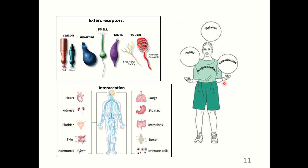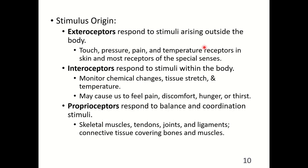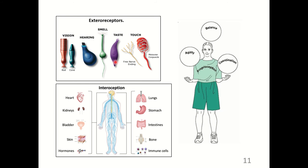Proprioception involves agility, balance, and coordination — as seen in the cerebellum chapter. Vision involves bipolar neurons; hearing and smell are also illustrated here. For smell, free nerve endings and Meissner's corpuscle represent touch. These come from exterior stimuli, while interoception comes from stimuli within the body — organs like the heart, kidneys, bladder, hormones as chemoreceptors, immune cells, bone, intestine, stomach, and lungs.